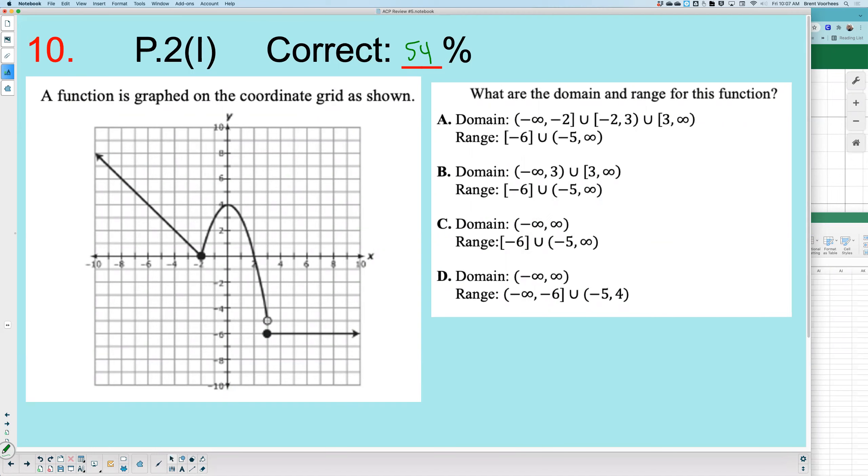A function is graphed on the coordinate grid as shown. What are the domain and range? All right, how would y'all do this one?